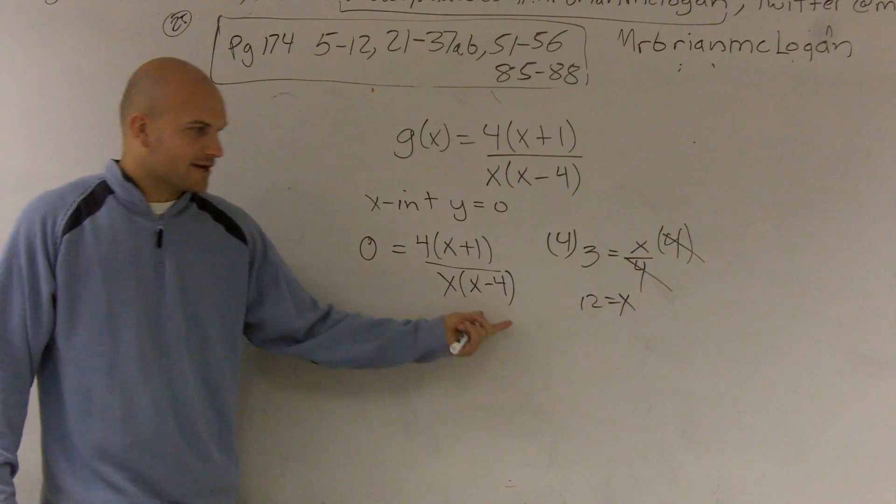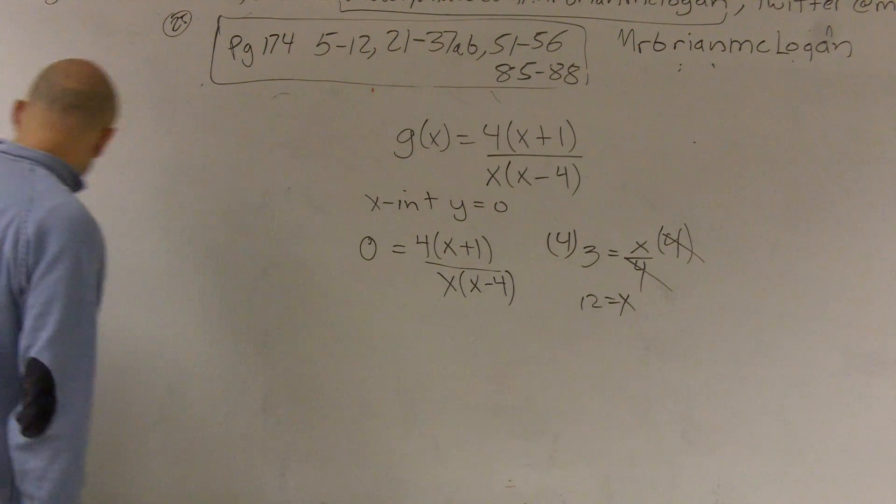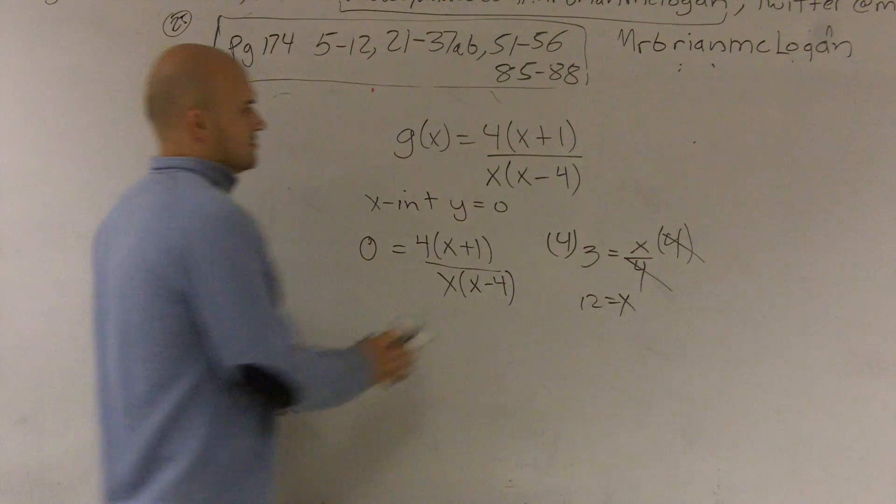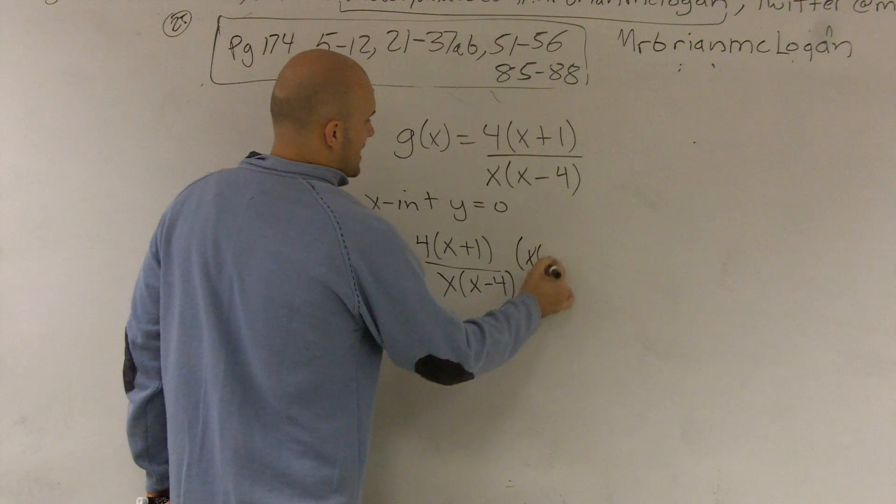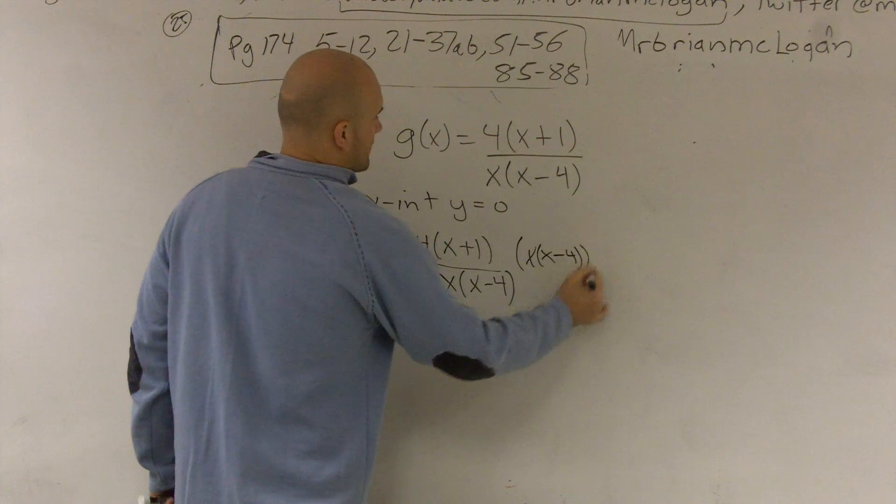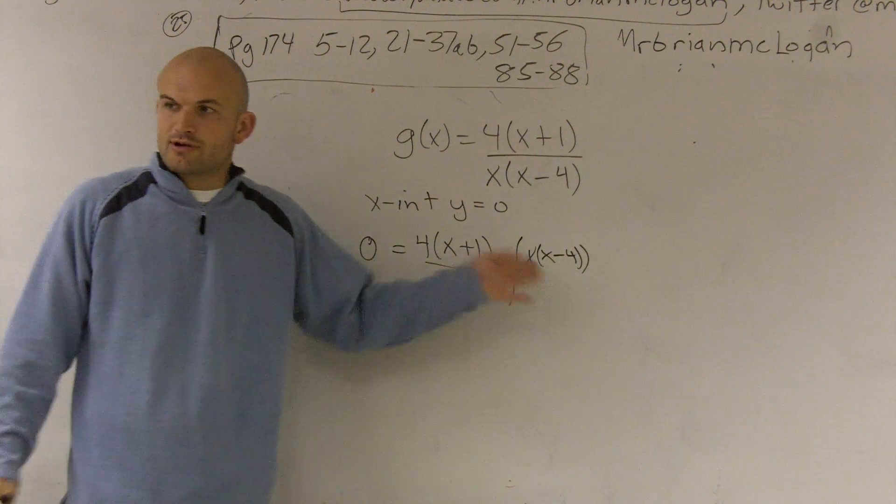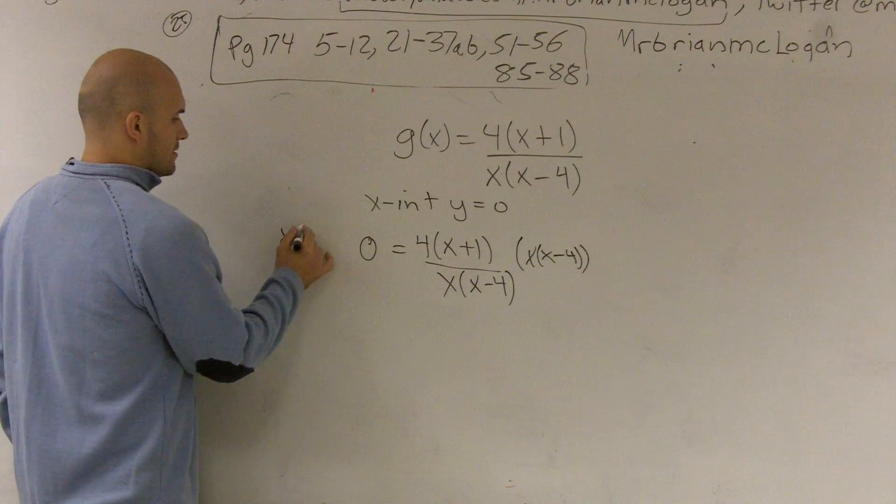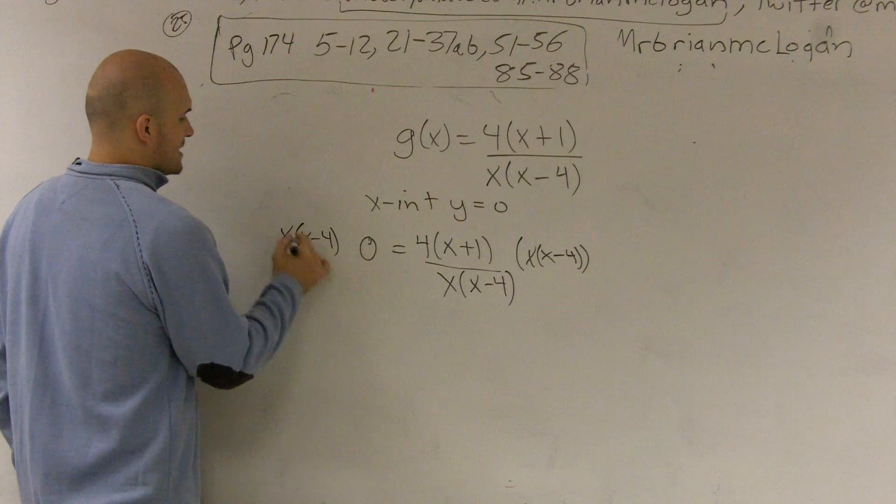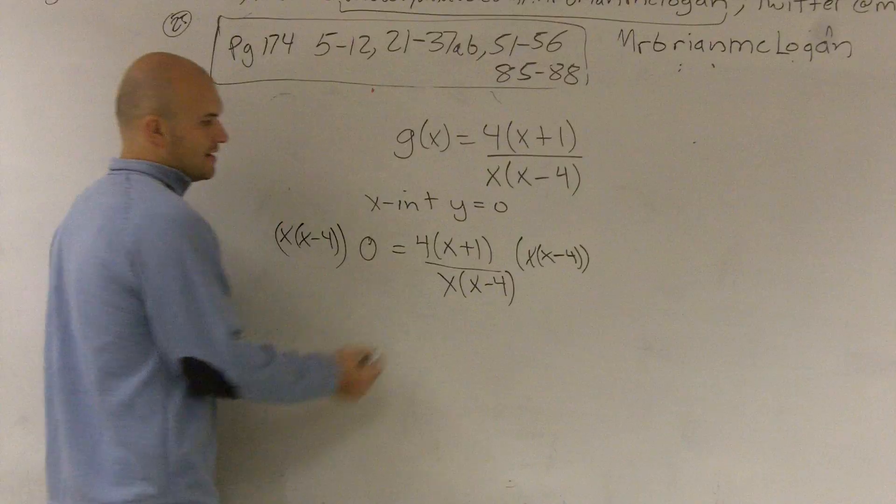The exact same thing is going to be true when you're solving for this. I need to get this off the bottom. So to get rid of it, I'm going to have to multiply x times x minus 4. Now, of course, yes, you could do distributed property and do all this stuff, but you don't really need to right now. You just need to make sure you're multiplying by x times x minus 4 on both sides.